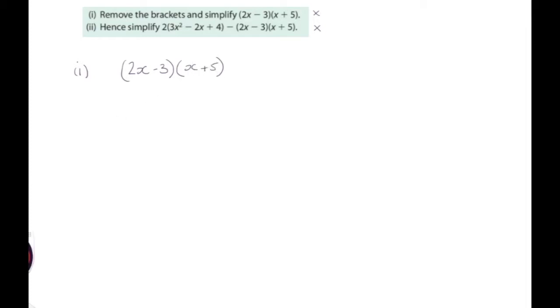Now when you are multiplying with brackets like this, if you don't remember, you have to multiply the 2x by this x, and then you also have to multiply the 2x by this 5, and you also have to multiply this minus 3 by this x, and you have to multiply this minus 3 by this 5. So there's four different pieces of multiplication we have to do in this sum.